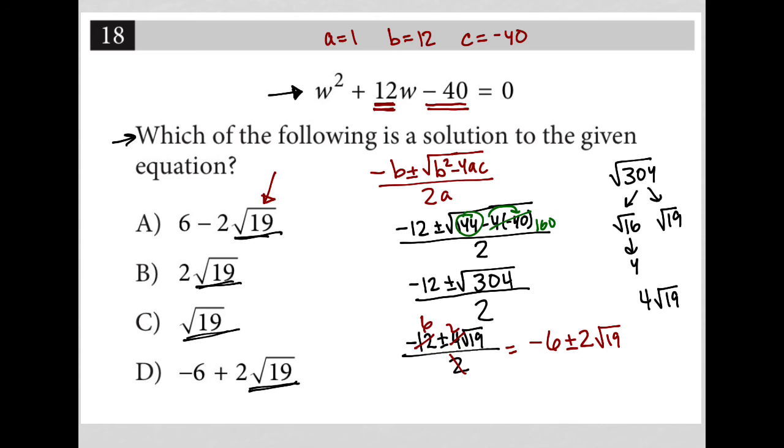So looking at my answer choices, it looks like choice D has to be the correct answer here because that's one of our solutions. Because this would become negative 6 plus 2 root 19 as a solution and negative 6 minus 2 root 19 as our other solution. That's what the meaning of plus or minus is. So choice D is the correct answer here.